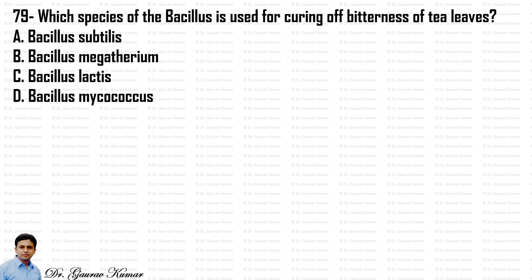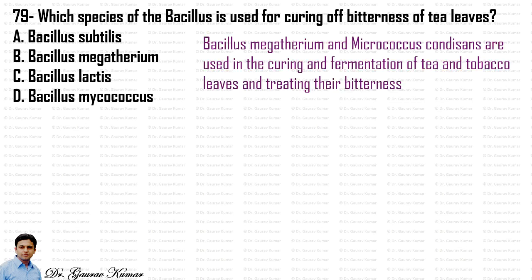Which species of Bacillus is used for curing of bitterness of tea leaves? Bacillus megatherium and Micrococcus condescens are used in the curing and fermentation of tea and tobacco leaves and treating their bitterness. So the answer is B, Bacillus megatherium.